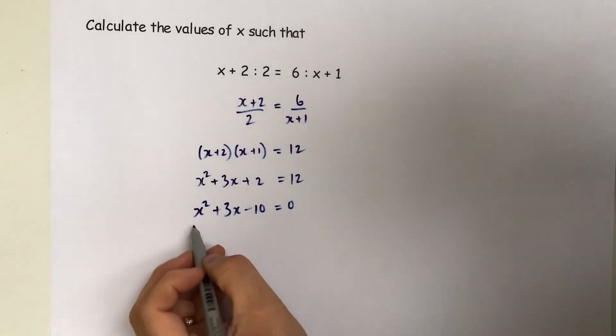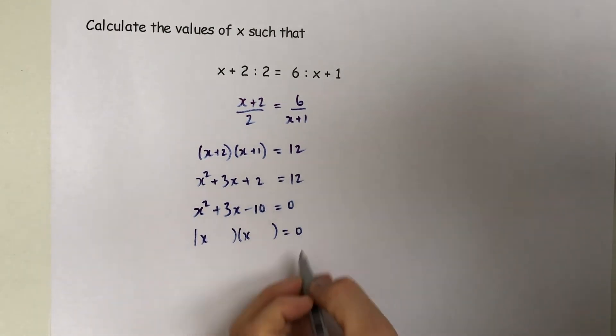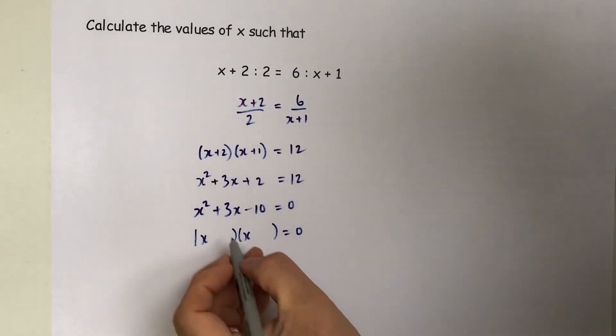If we factorize, x times x is x squared. 10 could be 1 times 10, or it could be 2 times 5.